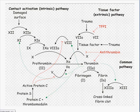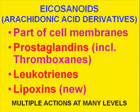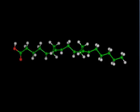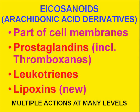Eicosanoids are derived from arachidonic acid — a 20-carbon fatty acid that is part of cell membranes. The main classes of eicosanoids are prostaglandins, which include thromboxanes, leukotrienes, and lipoxins. The substances enzymatically produced in these three branches cause the effects we see in acute inflammation at many levels.